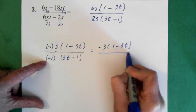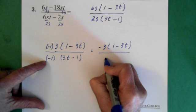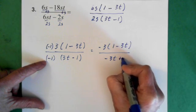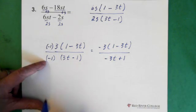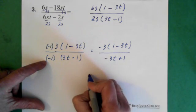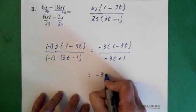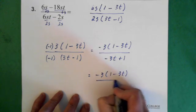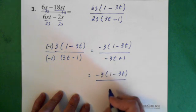And on the bottom, I'm going to multiply through here. So I end up with minus 3t plus 1. So I multiply that through. Now I'm just going to change this so it becomes apparent what we're looking at. So we have minus 3 times 1 minus 3t. And in the denominator, you see we have 1 minus 3t here. So 1 minus 3t.